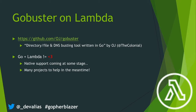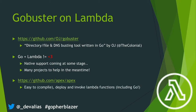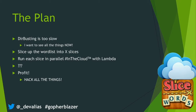Lambda natively doesn't support Go, which is kind of annoying, but you can use one of their supported languages to wrap around it and just run the binary directly. One project that helps is Apex — a little command line tool that allows you to easily compile, deploy, and invoke Lambda functions, and it supported Go. So the plan was: dir-busting is too slow, so we cut up the word list, send it up to the cloud, run it in parallel, some kind of black magic happens, and hopefully I profit and get to hack all the things I found.